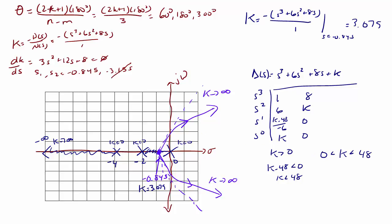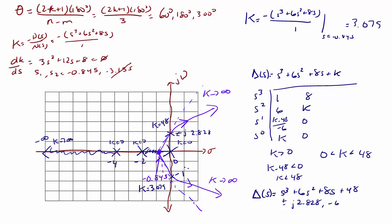We now know the imaginary axis crossover point occurs at k equal to 48. At that gain, delta(s) equals s cubed plus 6s squared plus 8s plus 48, and the roots of the characteristic equation are plus or minus j2.828 and negative 6. So the crossover points on the root locus are at j2.828 and negative j2.828, with an additional pole at negative 6 when k equals 48.